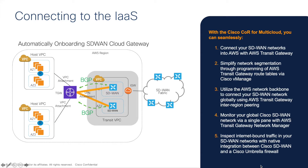In this video we're going to show you how to use the Cloud onRamp multi-cloud features of the Cisco SD-WAN solution. We have the SD-WAN fabric connected from the branch to the headquarter or data centers already, and we want to extend the SD-WAN fabric to the cloud infrastructures by using the multi-cloud features of Cisco SD-WAN.